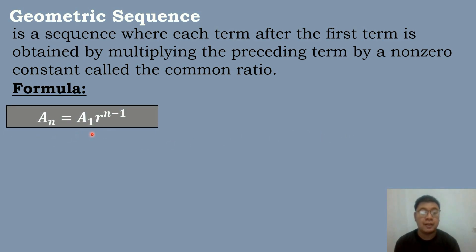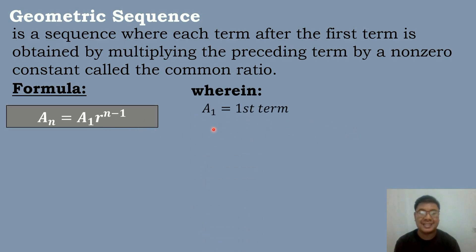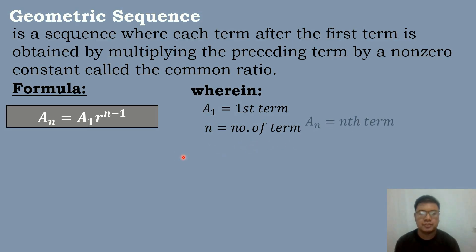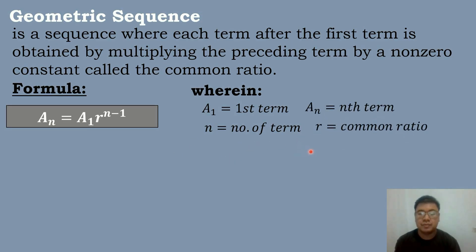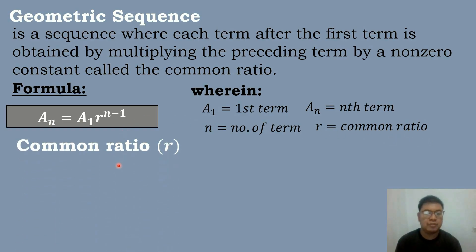to a sub 1 times r raised to the n minus 1 power, wherein a sub 1 is the value of the first term, n is equal to the number of terms, and a sub n is the nth term.